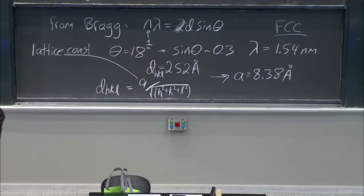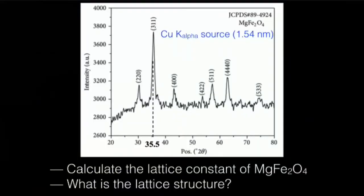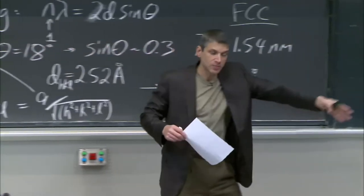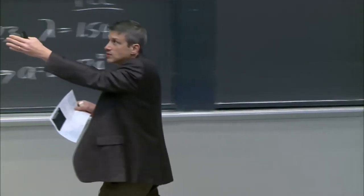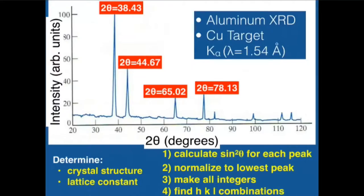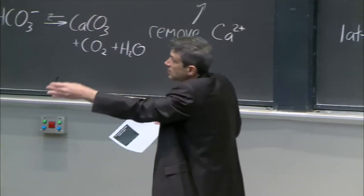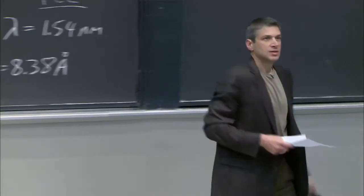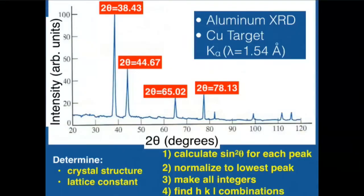You could also have a problem where you're not given the planes but instead just 2θ values. In that case, you use the XRD procedure: you create your columns — 2θ, θ, sinθ, sin²θ — then you normalize by taking the lowest value, clear fractions, and find the HKL combinations. That's how you go from 2θ values to identifying the planes. Those are examples of things I want you to be able to do with X-rays and XRD.